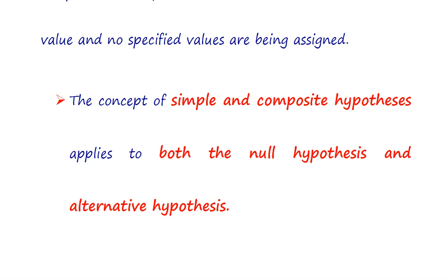In conclusion, if all parameters are completely specified, then this is a simple hypothesis. If any single or both parameters are not completely specified, then this is a composite hypothesis. An important point: the concept of simple and composite hypothesis applies to both the null and alternative hypothesis.